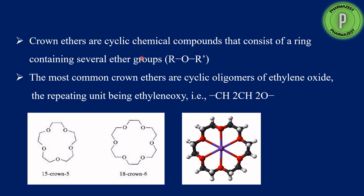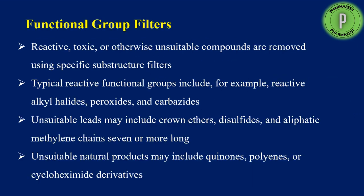Crown ethers are cyclic chemical compounds consisting of a ring containing ether groups (R–O–R). For example, 15-crown-5 has five oxygen/ether groups, and 18-crown-6 has six ether groups. The most common crown ethers are cyclic oligomers of ethylene oxide, with the repeating unit being ethylene oxy (CH₂CH₂O). Retaining such reactive functional groups means they will fail later in the clinical process. Unsuitable natural products can also include quinones, polyenes, and cycloheximide — these are also eliminated if present in any molecule.